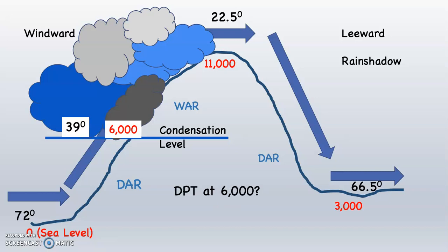What about the dew point temperature at 6,000 feet on the windward side? Remember, when the relative humidity is 100%, we also know two other things — these three things always go together hand in glove. If the relative humidity is 100%, the air is saturated. If the air is saturated, the air temperature and the dew point temperature must be the same number. So if the relative humidity is 100% at 6,000 feet and the air temperature is 39 degrees, the dew point temperature must also be 39 degrees.